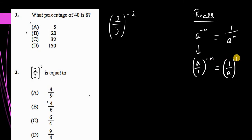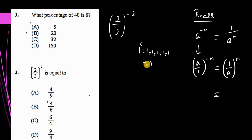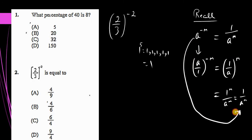We change the negative m power to a positive m power. We know that if we raise 1 to any power, we still get 1. 1 to the 0 power is 1, 1 to the 2nd power is 1, 1 to the 3rd power is 1. So 1 to the m power divided by a to the m power is really 1 over a to the m power, because 1 to any power gives us 1.